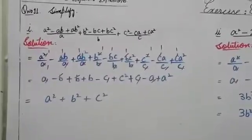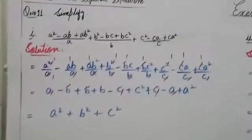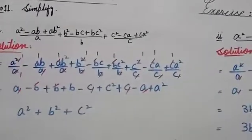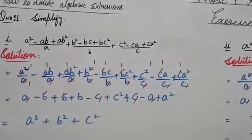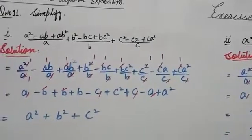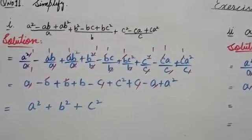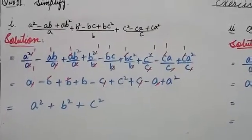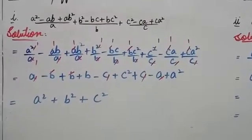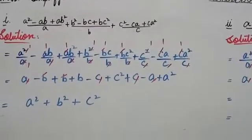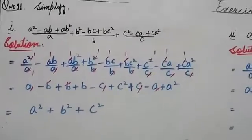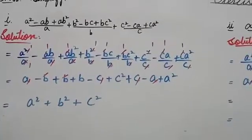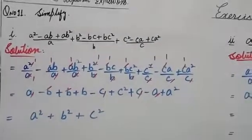The first part is: a² minus ab plus ab² by a, plus b² minus bc plus bc² by b, plus c² minus ca plus ca² by c. You can see that there are three algebraic expression fractions.